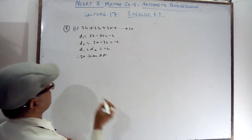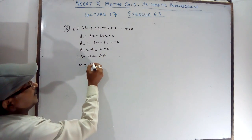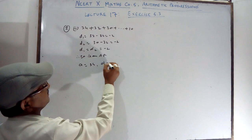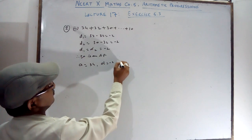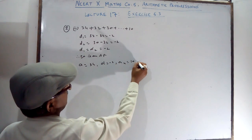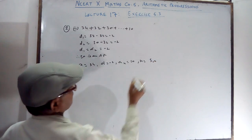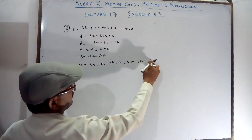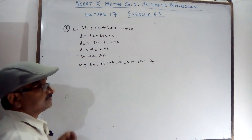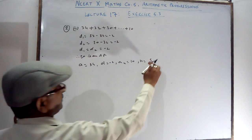When you confirm it is an AP, write down what A is, what D is, what AN is, and then find out N and Sn — two things you want to find out.